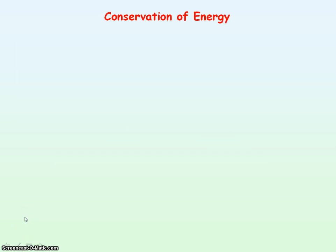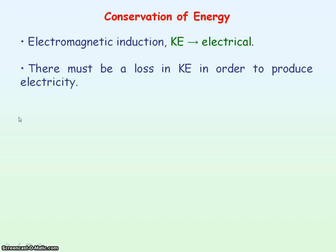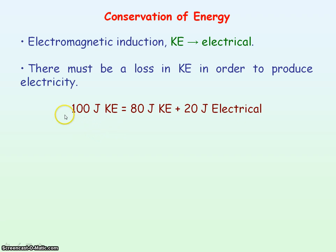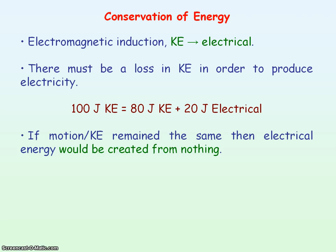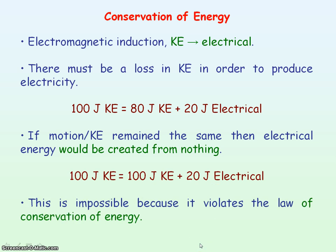For electromagnetic induction, we need relative motion between a conductor and a magnet. In terms of transformation of energy, we're getting kinetic energy transforming into electrical energy. For example, if we produce 20 joules of electrical energy, then we've needed to have transformed 20 joules of kinetic energy. If the motion was not opposed, kinetic energy remains the same, and the electrical energy would be created from nothing. This is not possible because it violates the law of conservation of energy.